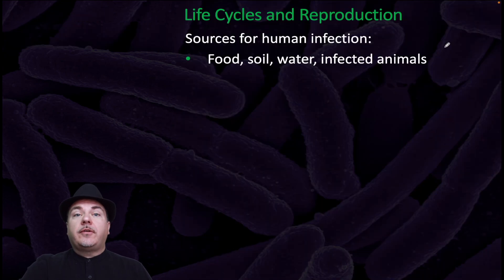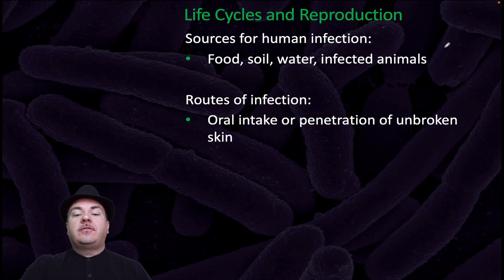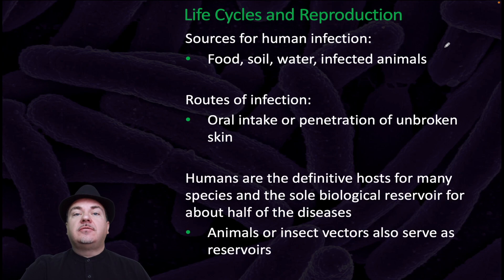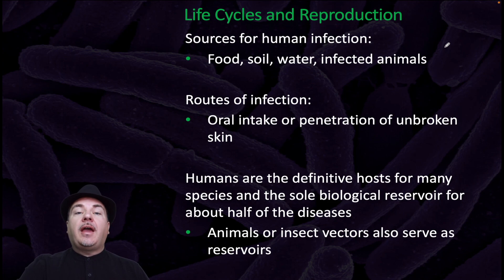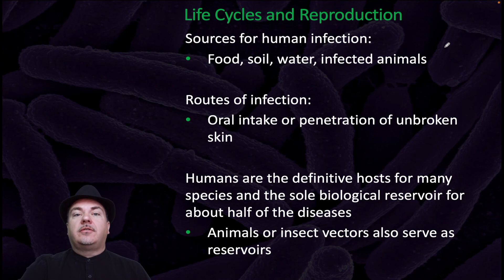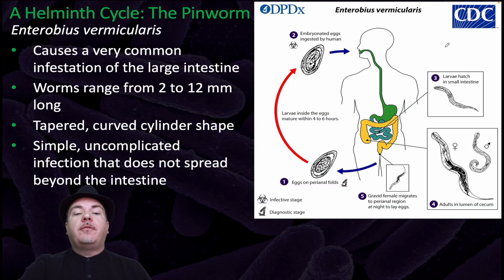The sources for human infection include food, soil, water, and infected animals. Routes of infection can be oral intake or penetration of the skin. Humans are the definitive host for many species and the sole biological reservoir for about half of the diseases. Animals or insect vectors also serve as reservoirs. Here's an example of a Helminth cycle for the pinworm.